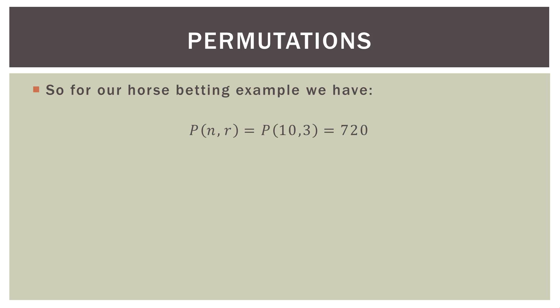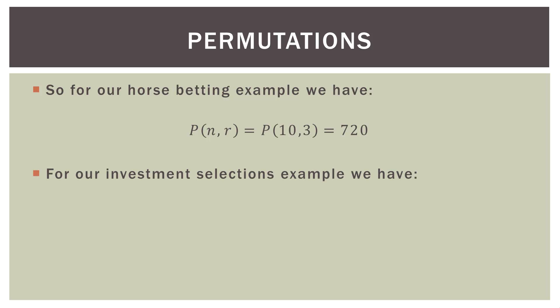For the horse betting example, n is 10 and r is 3 — we have 10 total horses and we're interested in three of them, so we can make 720 different lists of three horses. For the investment selections, n is 30 and r is 6, giving 427,518,000 different permutations.